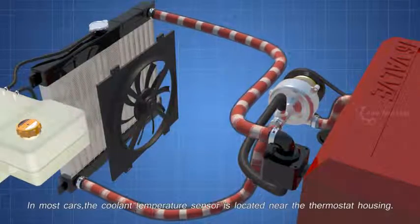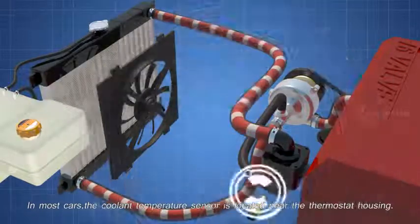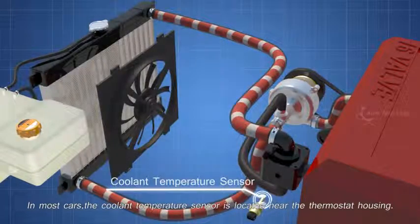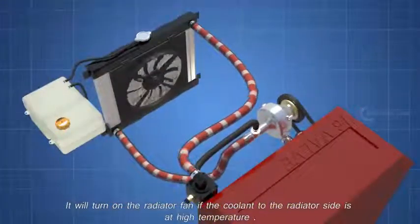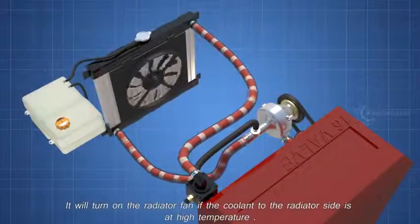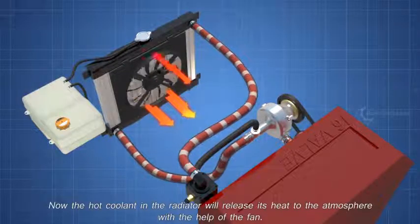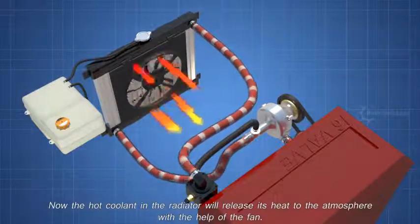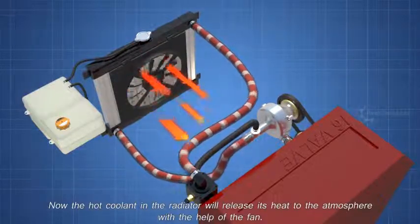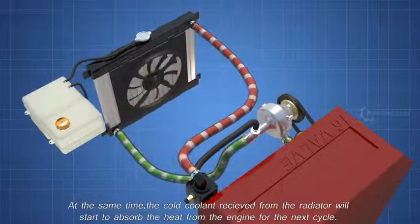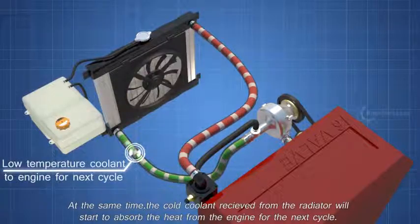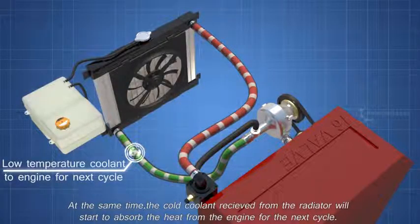In most cars, the coolant temperature sensor is located near the thermostat housing. It will turn on the radiator fan if the coolant to the radiator side is at high temperature. Now, the hot coolant in the radiator will release its heat to the atmosphere with the help of the fan. At the same time, the cold coolant received from the radiator will start to absorb the heat from the engine for the next cycle.